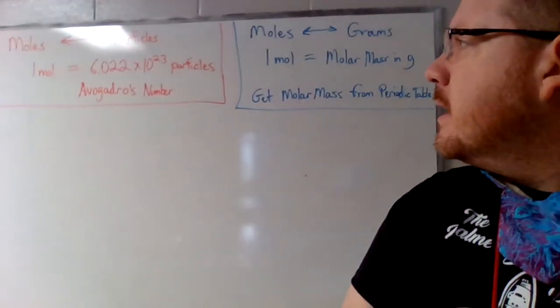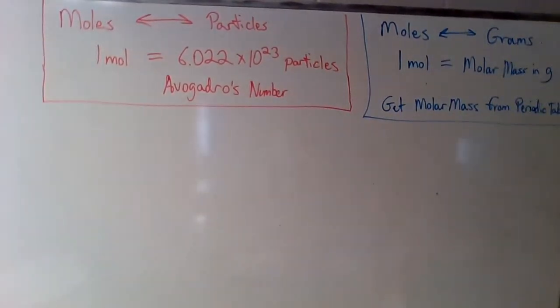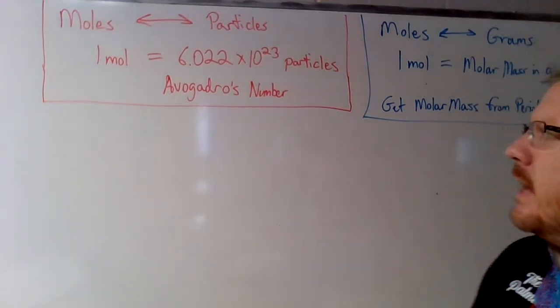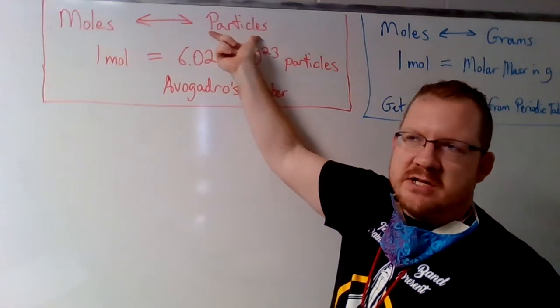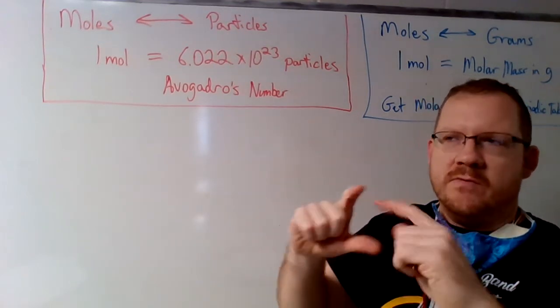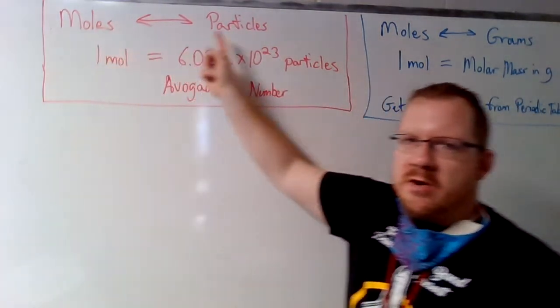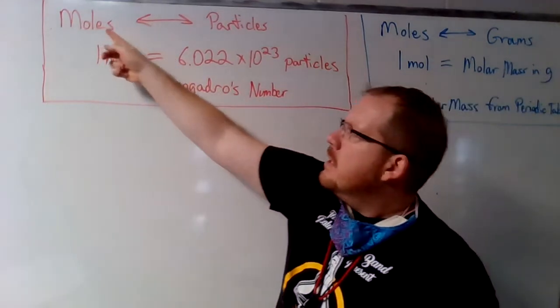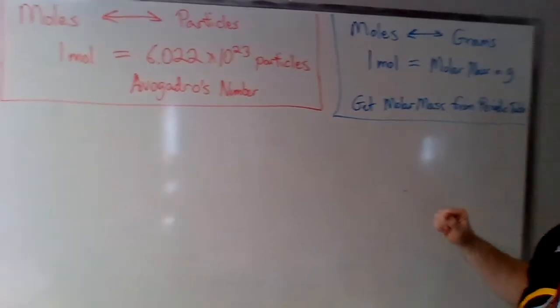I'm going to come over to the board and do the math. Particles is a generic term — you can call them atoms, electrons, protons, neutrons, molecules, or formula units. There are really only two or three choices: you have moles, you have particles, and you can also have grams. On the left, moles to particles — if going between those two, I'll use Avogadro's number. On the right in blue, if going between moles and grams, I use the molar mass from the periodic table.